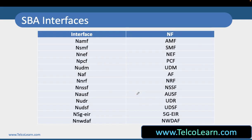All these network functions have some kind of SBI, or Service-Based Interfaces, which are typically named as the letter 'N' along with the name of the network function in small letters. For example, the AMF service-based interface becomes 'Namf', and the UDM service-based interface becomes 'Nudm'. That's all we have in this video. In the upcoming videos we are going to talk about all these network functions one by one.